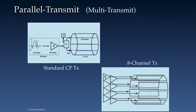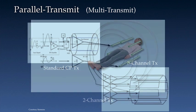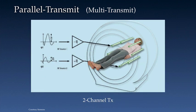In the standard circularly polarized or quadrature transmit configuration, a single RF transmitter is used. A multi-transmit system will have more than one RF transmitter. Currently, the most common configuration is for two RF transmitters to be used. This may be referred to as a two-channel transmit or dual-channel transmit.